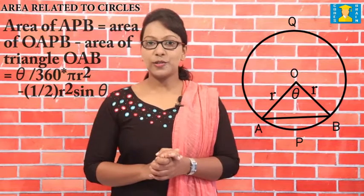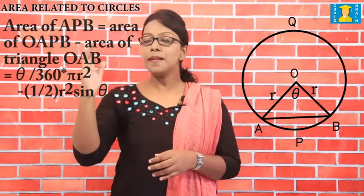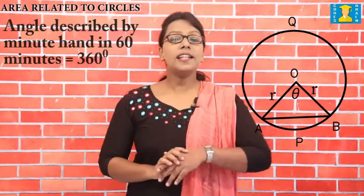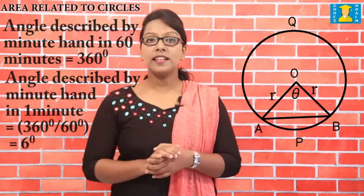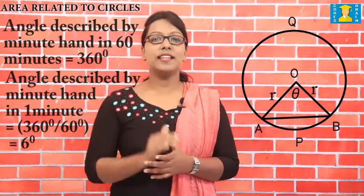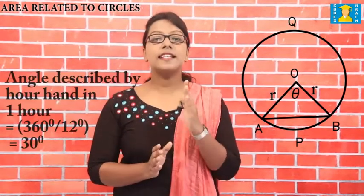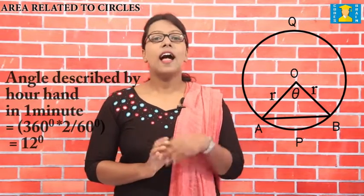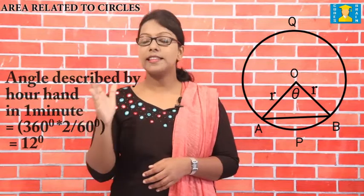Area of segment APB = area of sector OAPB − area of triangle OAB = θ/360 × πr² − (1/2)r² sin θ. The angle described by the minute hand in 60 minutes is 360°, so in 1 minute it is 360°/60 = 6°. The angle described by the hour hand in 12 hours is 360°, so in 1 hour it is 360°/12 = 30°, and in 1 minute it is 30°/60 = 0.5°.